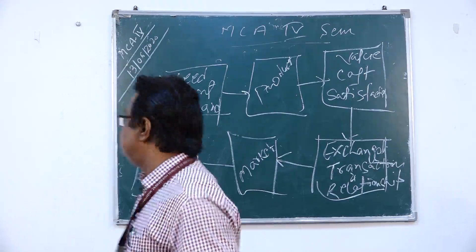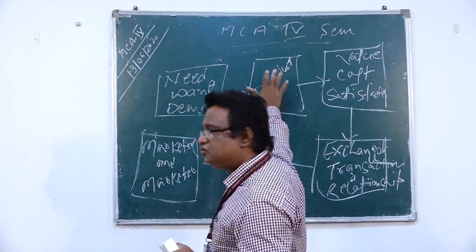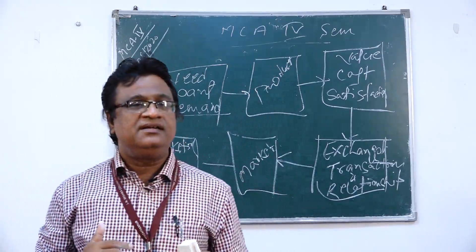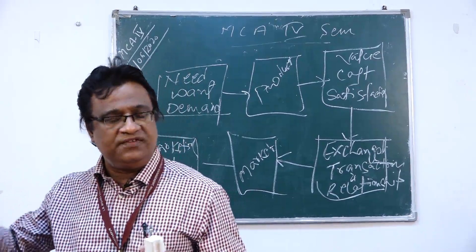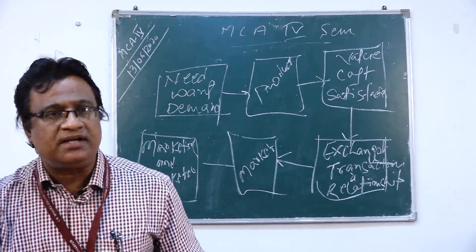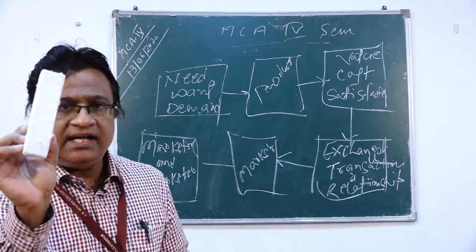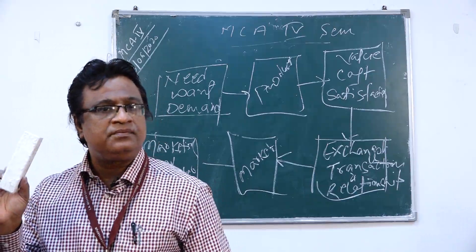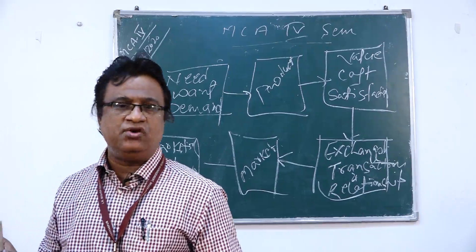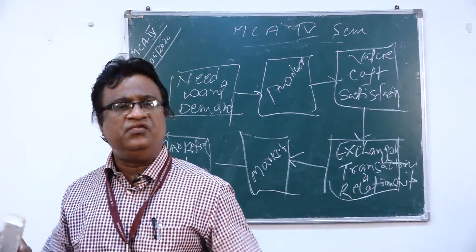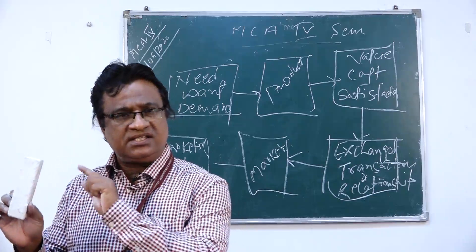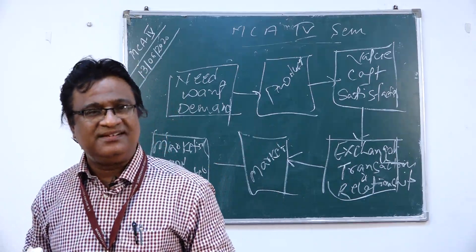Now we move to the next aspect: product. The question arises — how can we satisfy need, want, or demand? Obviously something must be there to satisfy the need, and here comes product. This can be something we touch and see — a physical product. But there are also things we cannot see, which we can only assume or feel — these are also products, like services. Hardly matters whether it is tangible or intangible, services are all products.